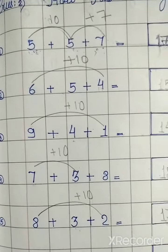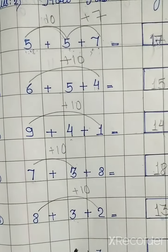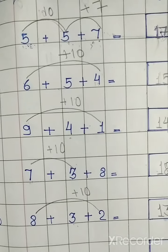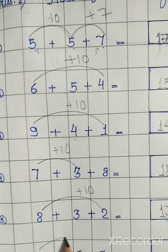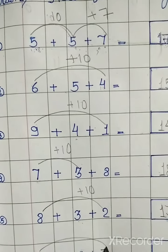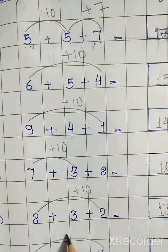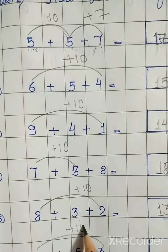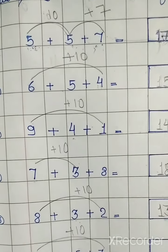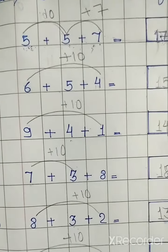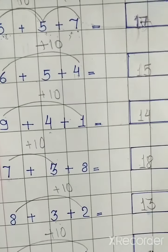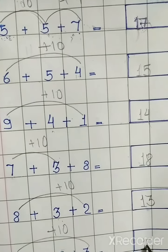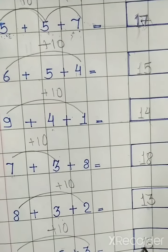Last: 7 plus 5 plus 3. 7 plus 3 kitna hota hai? 10. Agar usme hum 5 aur add karte hain toh kya aayega? 15. 10 plus 5 is equal to 15.